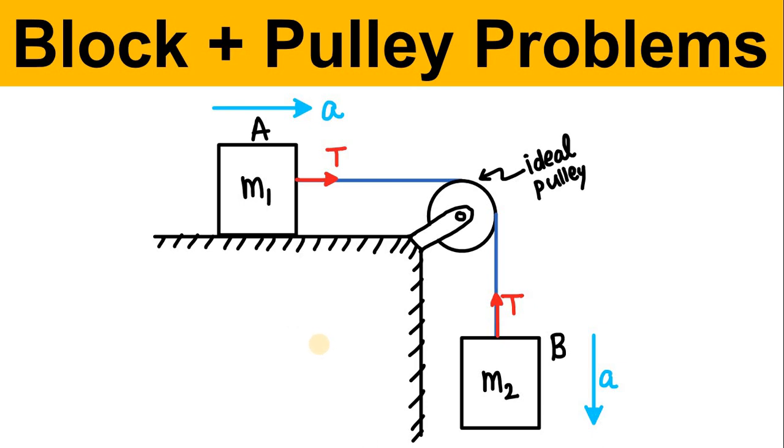Hello students, welcome to Physics Guru. In this video we will learn how to solve pulley block problems where the thread is passing over the pulley. Two blocks are connected like this, M1 and M2, and the thread is passing over the pulley. The pulley is ideal - that means the mass of the pulley is negligible and the friction is also negligible. What will be the acceleration of both blocks and what will be the tension in the string? That is the question.